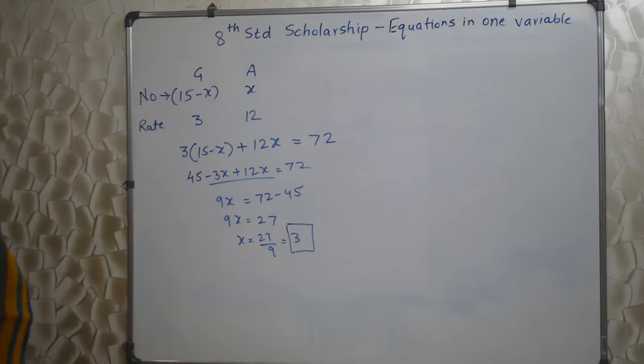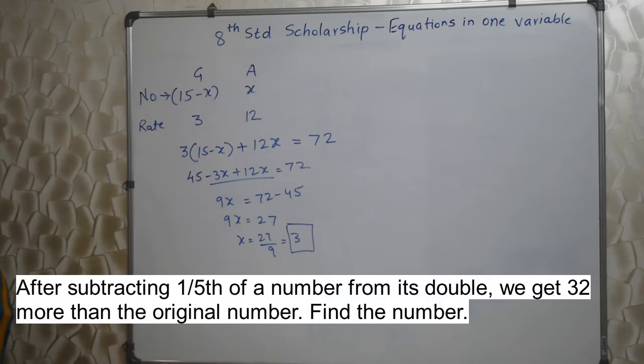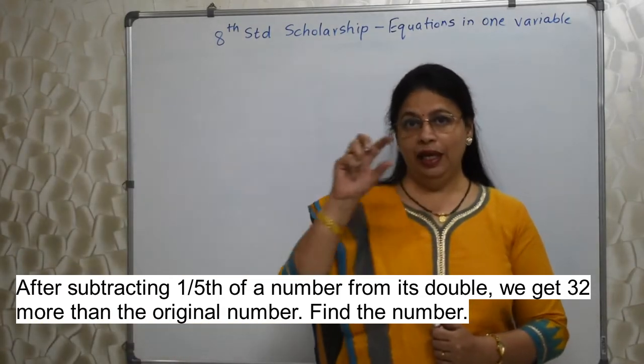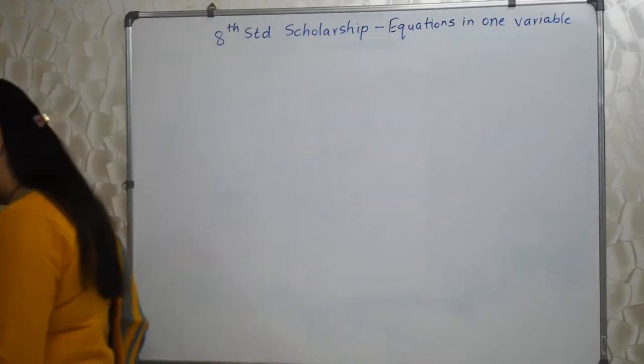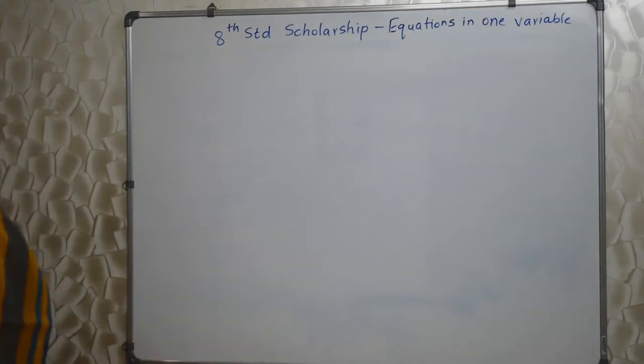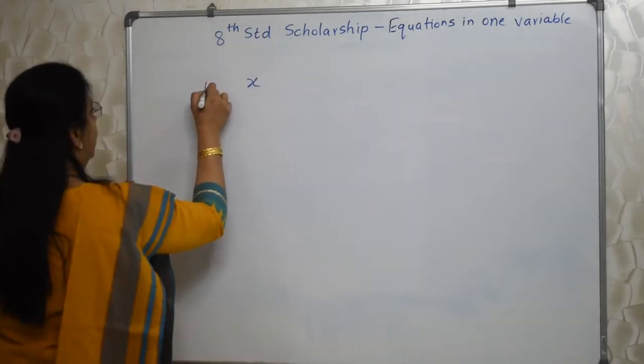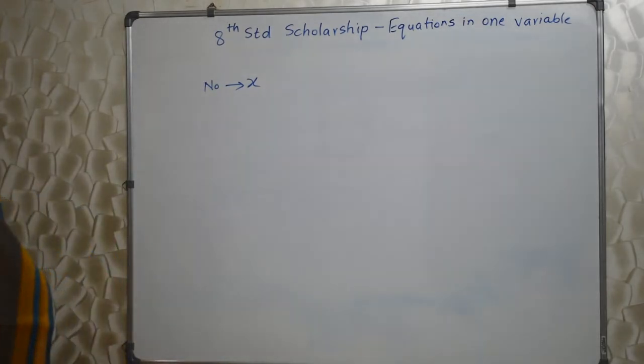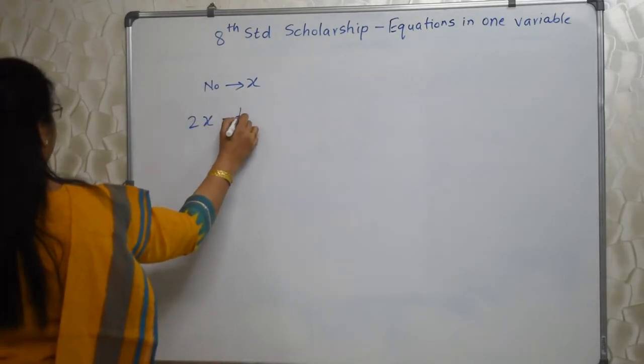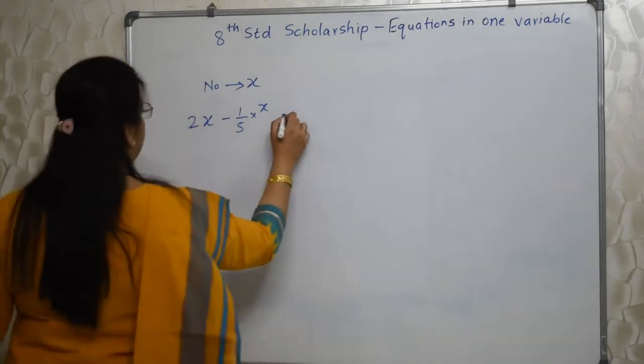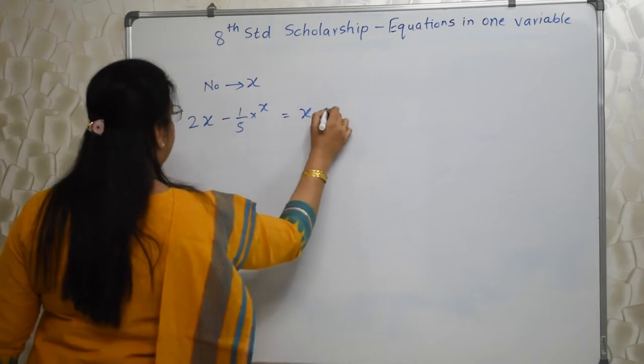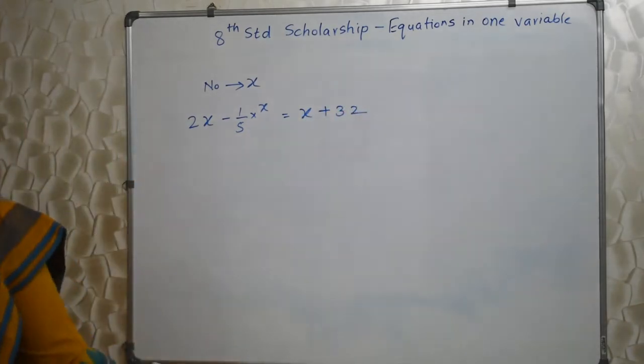Next sum will also appear on your screen. After subtracting 1/5 of a number from its double, we get 32 more than the original number. Find the number. Students, what they have written in English, we are supposed to understand properly and then convert, translate that into mathematical language. After subtracting 1/5 of a number from its double. We don't know the number, so we will assume number as x. First make a double of it, then subtract 1/5 of the number. Then what do we get? We get 32 more than the original number. So original number plus 32. This is the equation with one variable x.